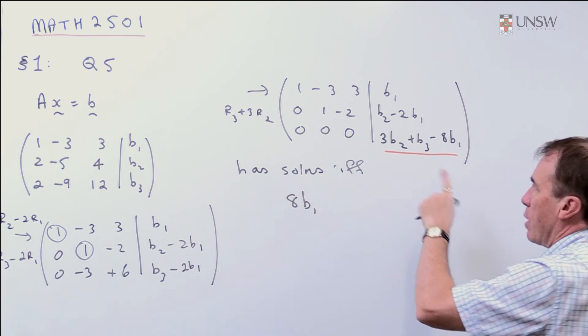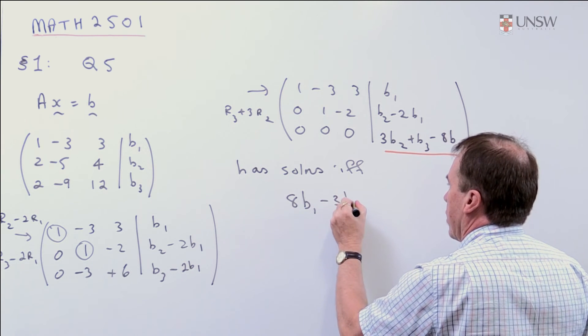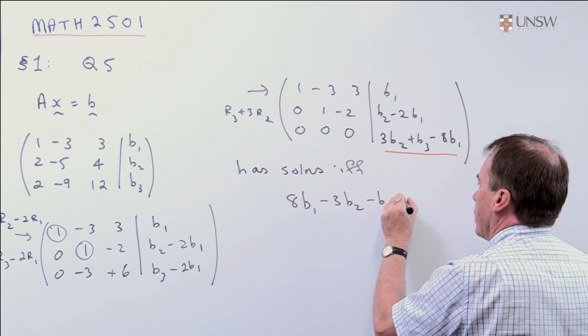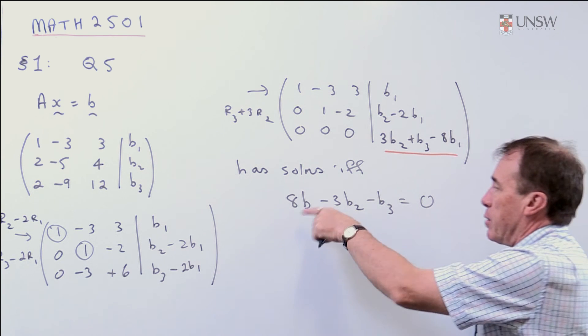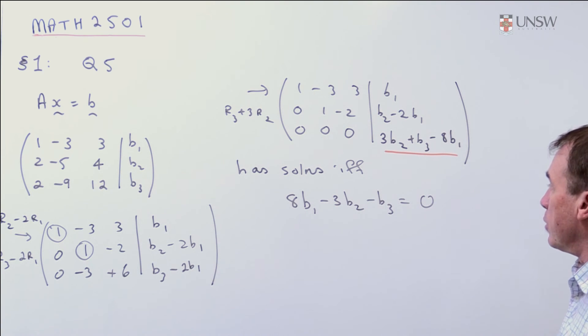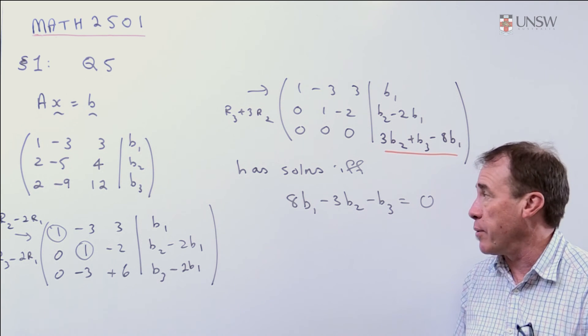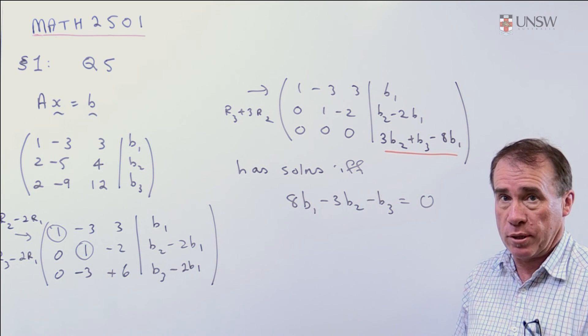So, I want this to be 0, I might just change the signs here, it doesn't matter, just to make the first coefficient positive. You could leave it as minus 8B1 plus 3B2 plus B3 is 0. And that's the solution to the problem.